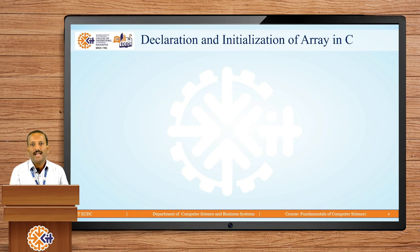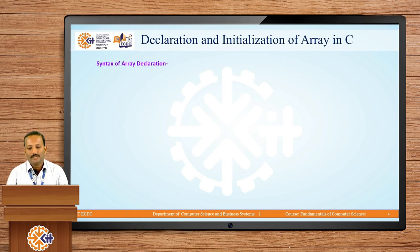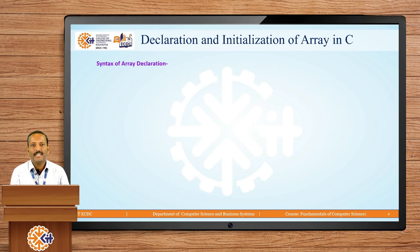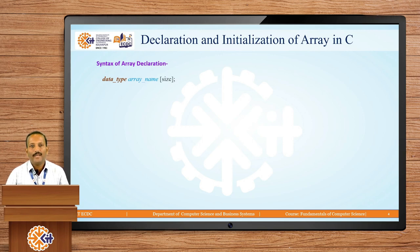The first point is declaration and initialization of array in C. When you deal with a programming language, there are predefined syntaxes. Similarly, to declare an array there is a syntax. Within that syntax you have to define an array. First, you always have to define the data type of that particular variable, then provide the name of the array and its size in square brackets, followed by a semicolon.